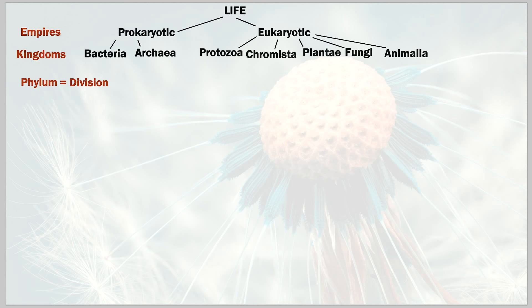Bacteria has 29 phyla, archaea has 5, protozoa has 11 — keep in mind these aren't species, just groups that break down further. Chromista has 9 phyla, plantae has 12, fungi has 7, and animals have 35 phyla — the most of all kingdoms. Now we're going to branch off into the animal kingdom.